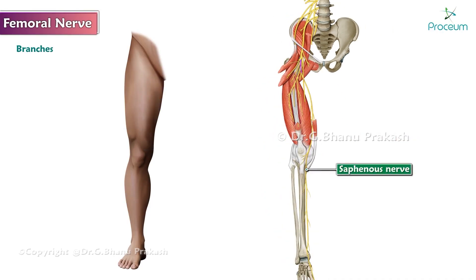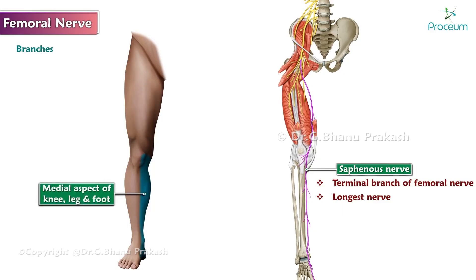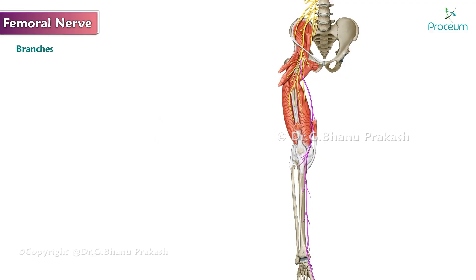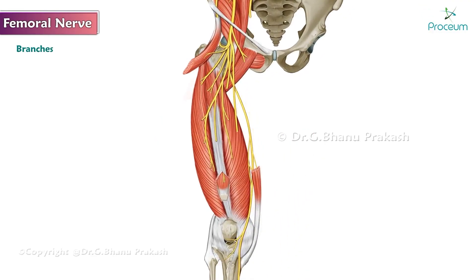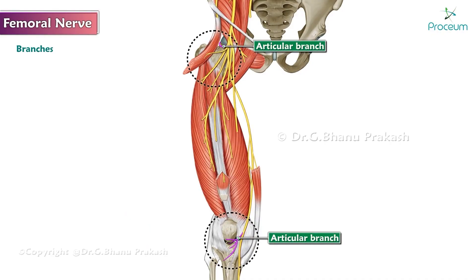The saphenous nerve is the terminal branch of the femoral nerve and the longest nerve in the body. It gives sensory innervation to the skin over the medial aspect of the knee, leg, and foot. The femoral nerve also provides articular branches that innervate the capsules of the hip and knee joints, allowing for proprioceptive feedback about the joints.